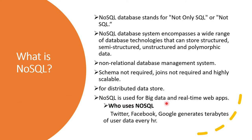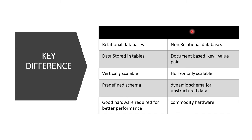NoSQL is good for big data or real-time web applications. It is used on platforms like Twitter and Facebook where data generated is in terabytes. There is a key difference between relational and non-relational databases: a relational database uses SQL, and a non-relational database uses NoSQL.